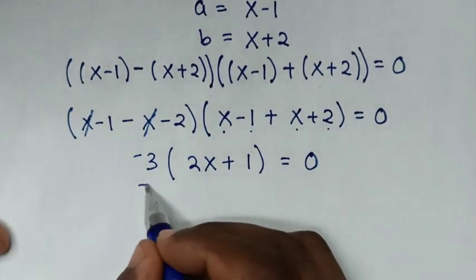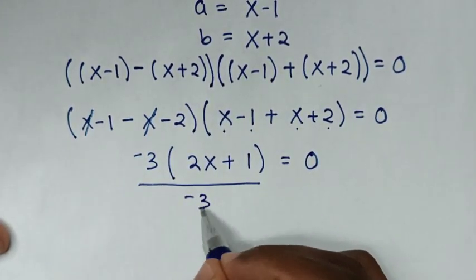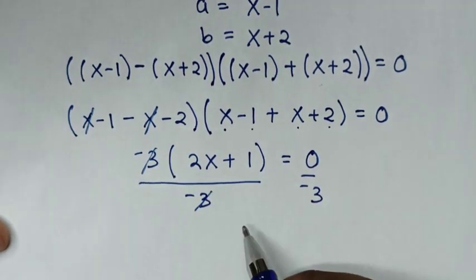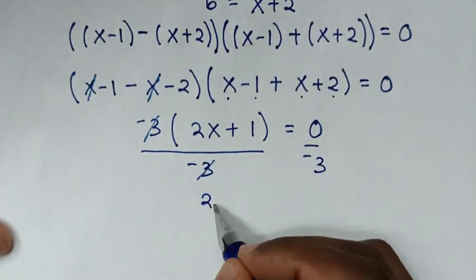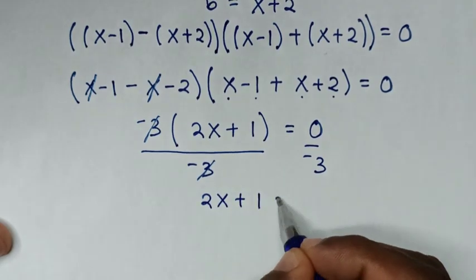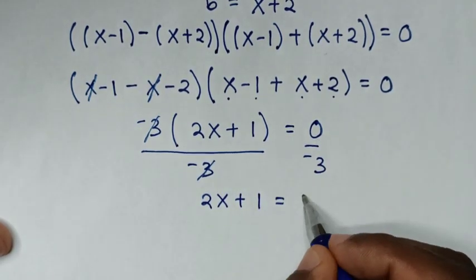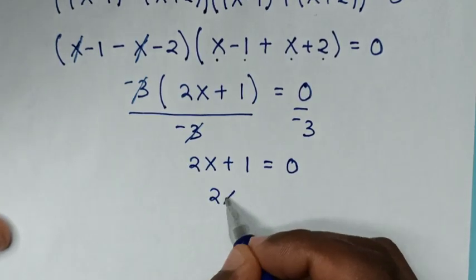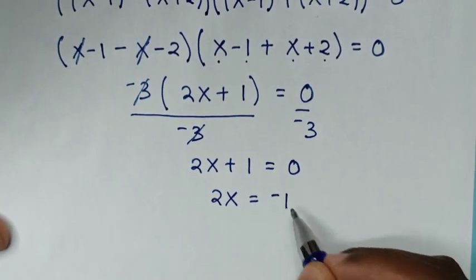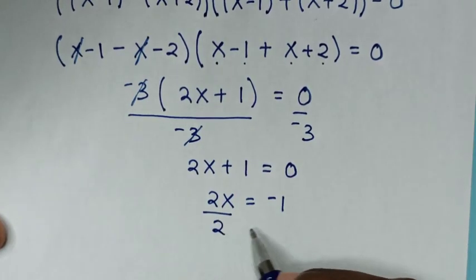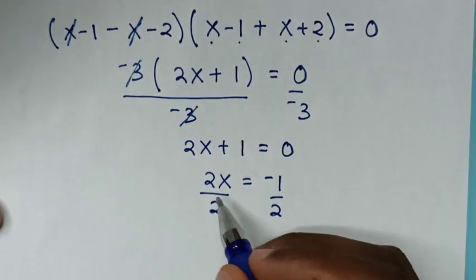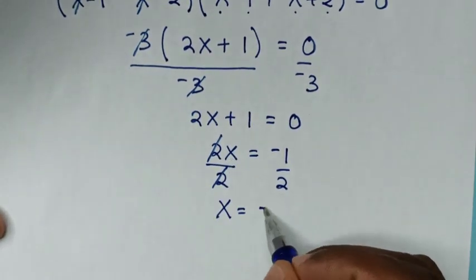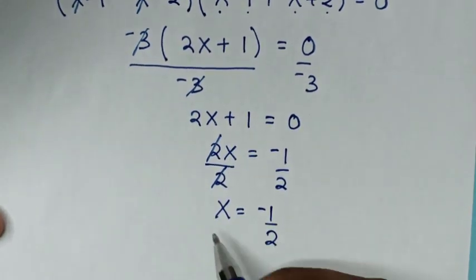We divide both sides by negative 3, which cancels, leaving 2x plus 1 equals 0. Taking 1 to the right side gives 2x equals negative 1. Dividing both sides by 2, we get x equals negative one half.